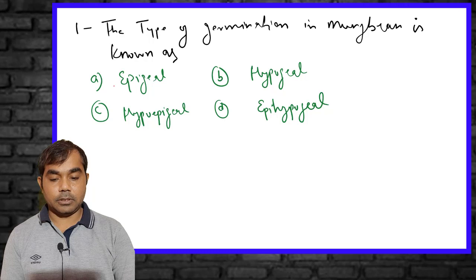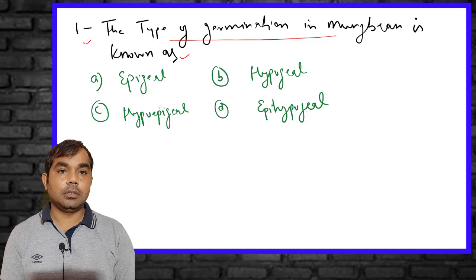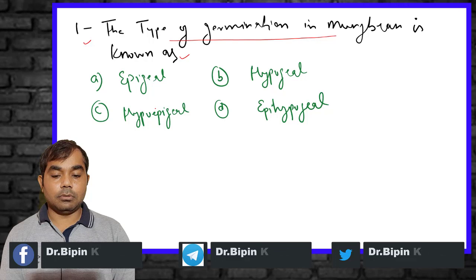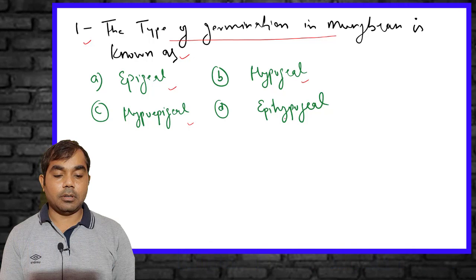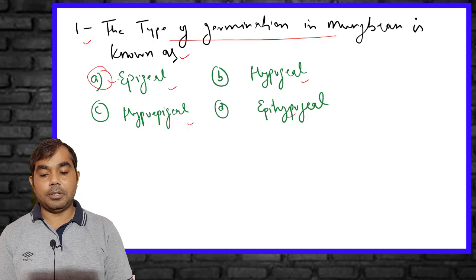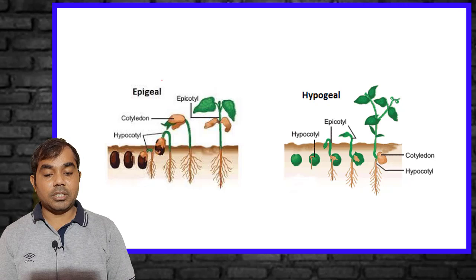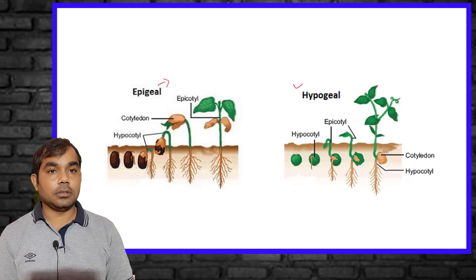The first MCQ asks: what type of germination is found in mung bean? Options are epigeal, hypogeal, hypophyseal, and epi-hypogeal. The right answer is epigeal. Two kinds of germination are found in crops — epigeal and hypogeal.